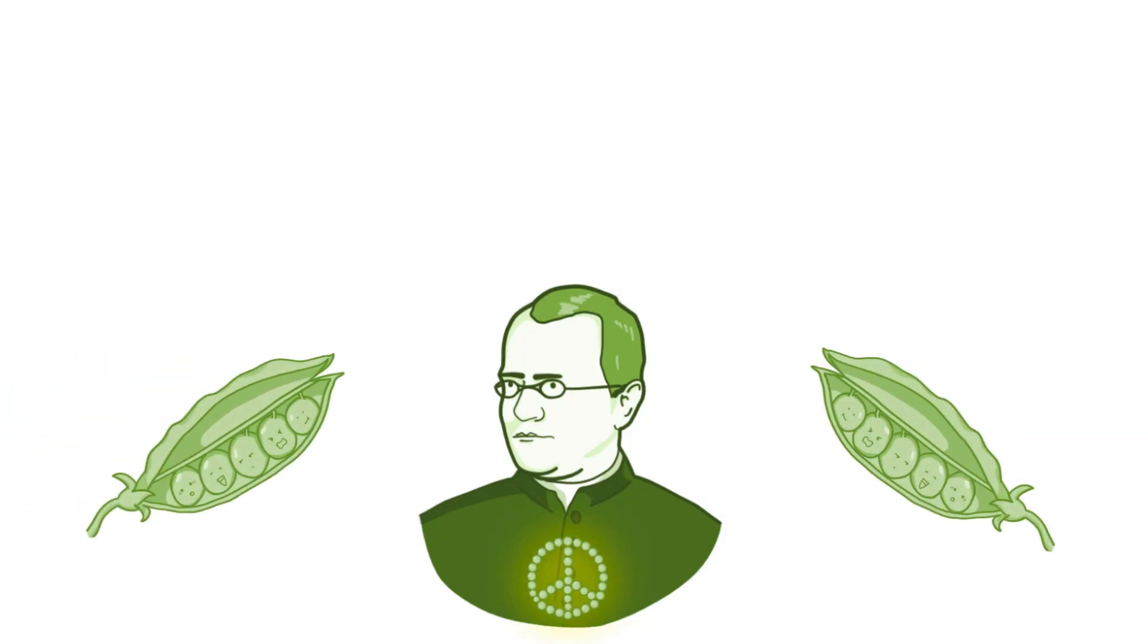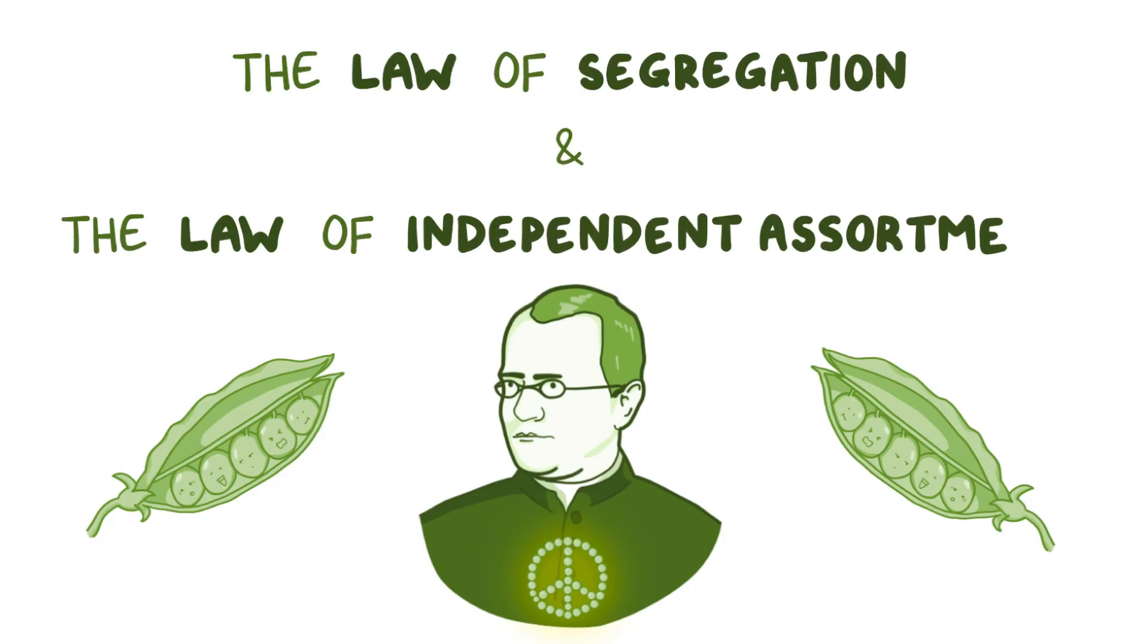In addition to having lots and lots of peas in his garden, he helped to formulate two important laws: the law of segregation and the law of independent assortment.